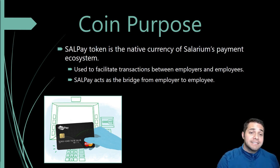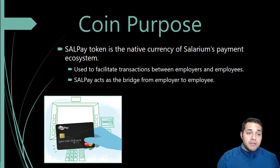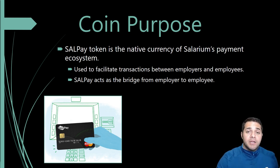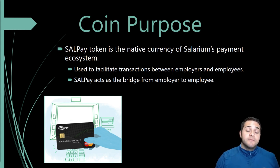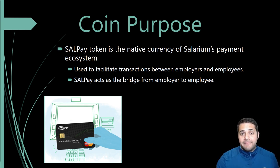Salpay is the token and the native currency of the Solarium payment ecosystem. Using the Salpay token and network removes the inefficiencies of transferring funds for payroll — basically what they're stuck with right now. The token acts as a bridge, allowing employers to send money much cheaper and quicker to employees in the Philippines, where the token is converted into pesos for them to spend.